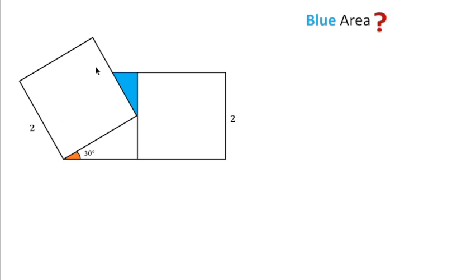Welcome to Definite Mind. In this question there are two equal squares, as we can see, having side length 2 units and 2 units, and this angle is 30 degrees. Then we have to find the area of this blue region, that is the area of this blue triangle.